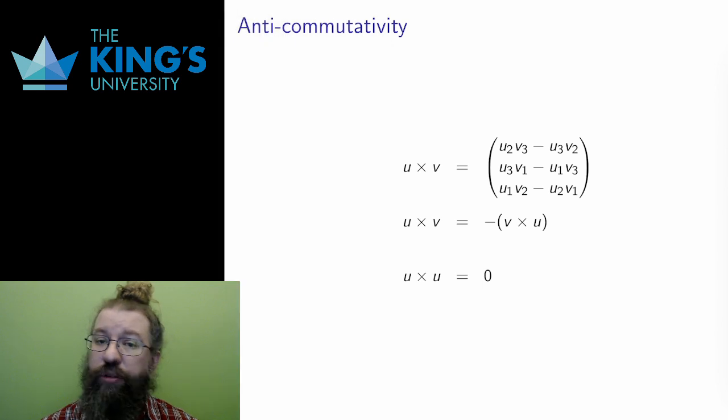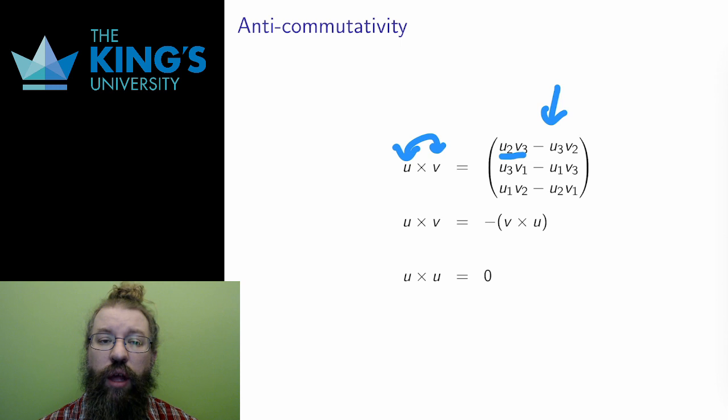For commutativity, though, the story is different. Here's the formula, again, for the cross product. Notice the subtractions. If I switch the order of u and v, then the u2v3 term in the first component would become negative v3u2. And the negative u3v2 term would become v2u3. The signs will change.